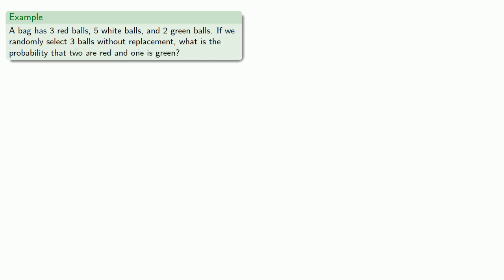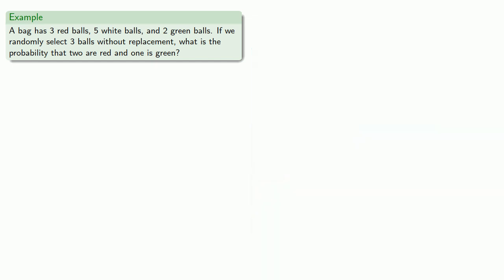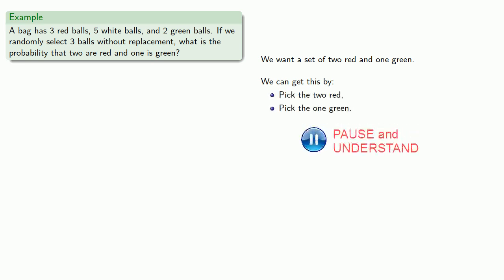Well, how about something that doesn't have a 0 probability? Suppose that we select 3 balls without replacement, and we want to find the probability that 2 are red and 1 is green. Well, let's think about this. We want a set of 2 red and 1 green, and we can get this by picking the 2 red, and then picking the 1 green. And since our choices for the 2 red can't be our choice for the 1 green, this is a permutation.